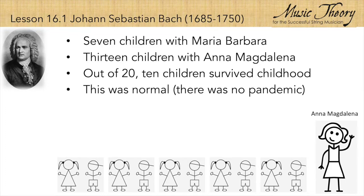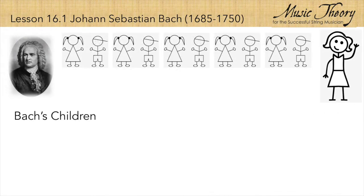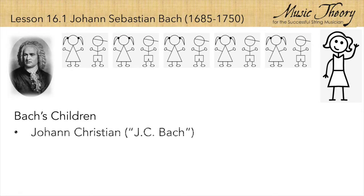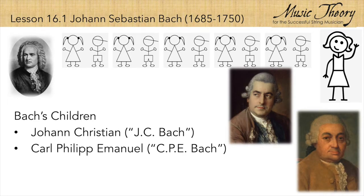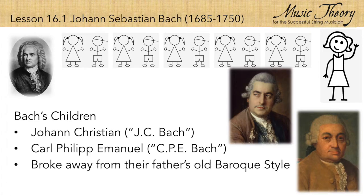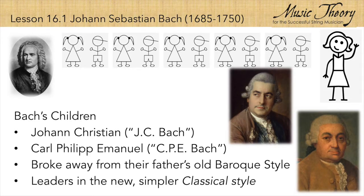Being a kid in the 1700s was difficult, but Bach's ten surviving children still found time to study, do chores, and practice their instruments. Several of his sons, including Johann Christian and Carl Philipp Emanuel, grew up to be respected composers who broke away from the Baroque style and helped establish a new, simpler classical style.